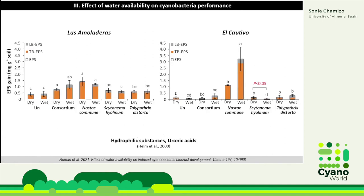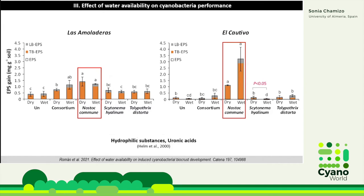This good performance of Nostoc commune is associated with their higher ability to synthesize exopolysaccharide compounds. The exopolysaccharides gain was higher in the soils inoculated with Nostoc commune. We distinguish two different fractions: the loosely bound EPS, which are the more soluble ones, and the tightly bound EPS, which are more condensed and more strongly attached to soil particles. Nostoc commune was able to increase the amount of both fractions of EPS. This good performance even under dry conditions can be associated with their capacity to produce hyaluronic acids that are released by this strain to cope with desiccation — to survive under desiccation conditions.